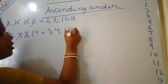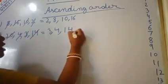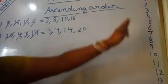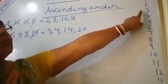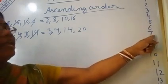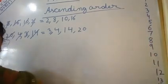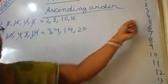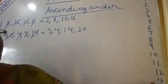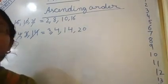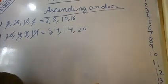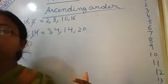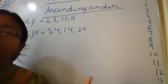So write 14 next, then write 20. If you look at the forward counting sequence I wrote — 0, 1, 2, 3, 4, 5, 6, 7, 8, 9, 10, 11, 12, 13, 14, 15, 16 — first comes 3, then 4, then 14. So it is the same process. It is not possible to write 1 to 100, so remember forward counting and you will automatically do the ascending order.